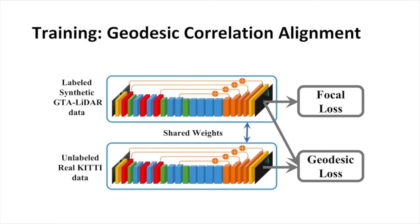In training, we use geodesic correlation alignment to align the model trained on two different domains.